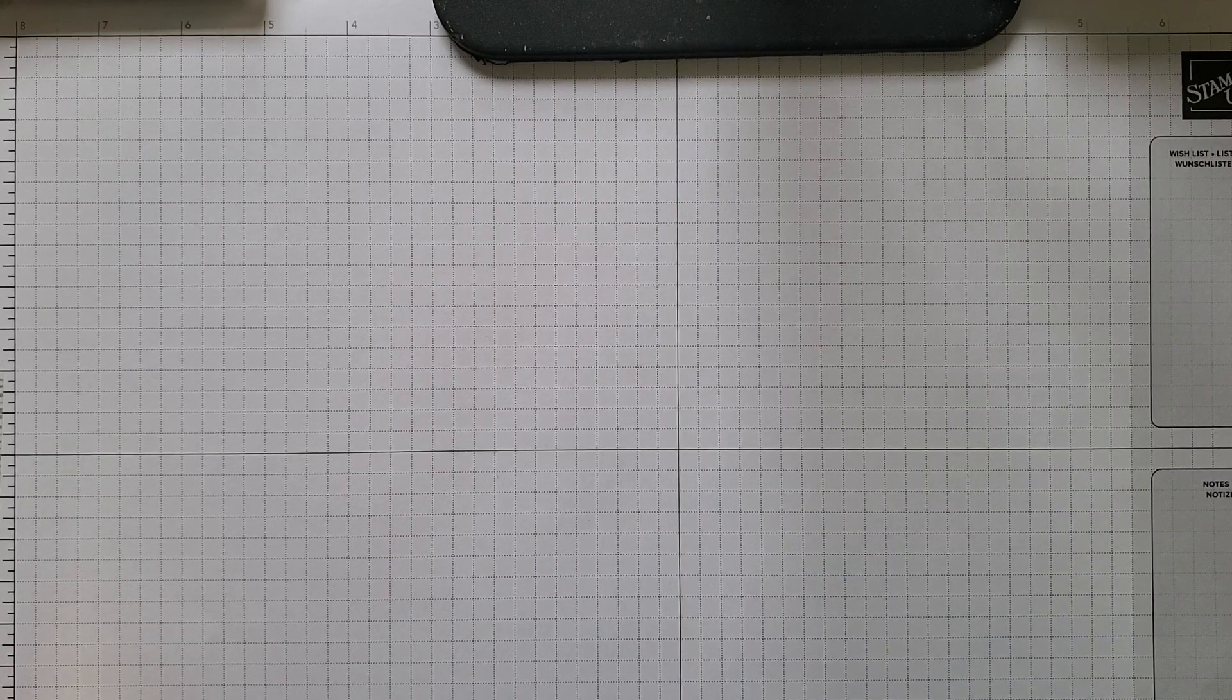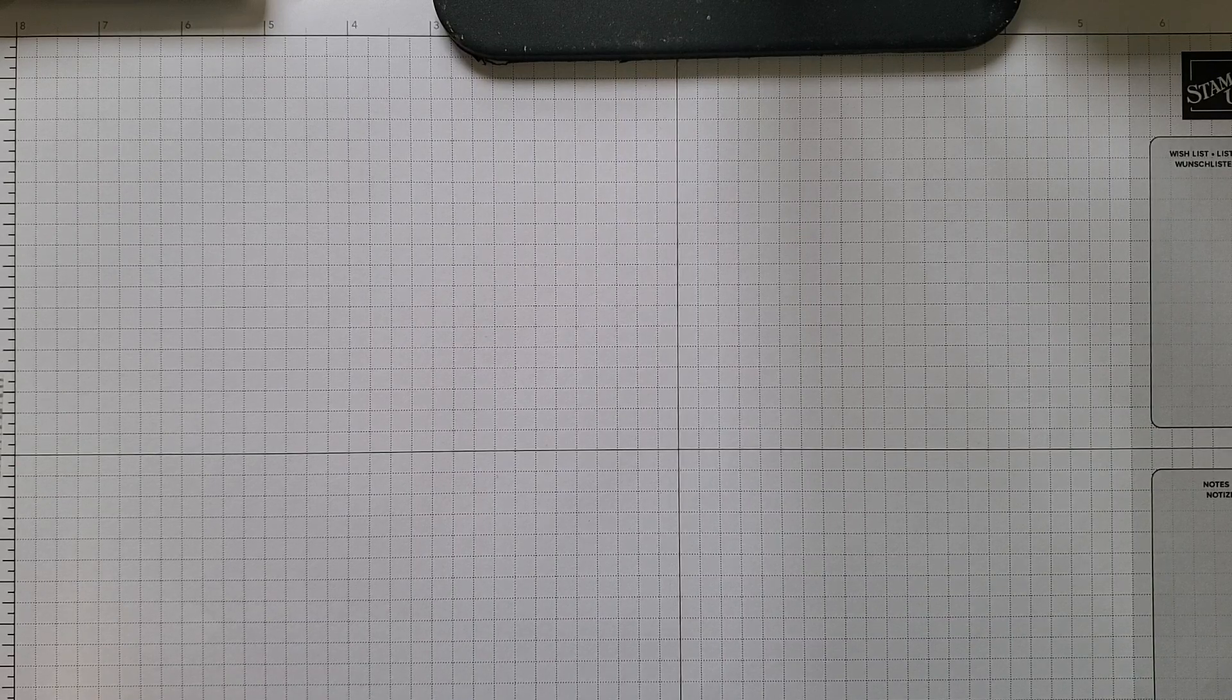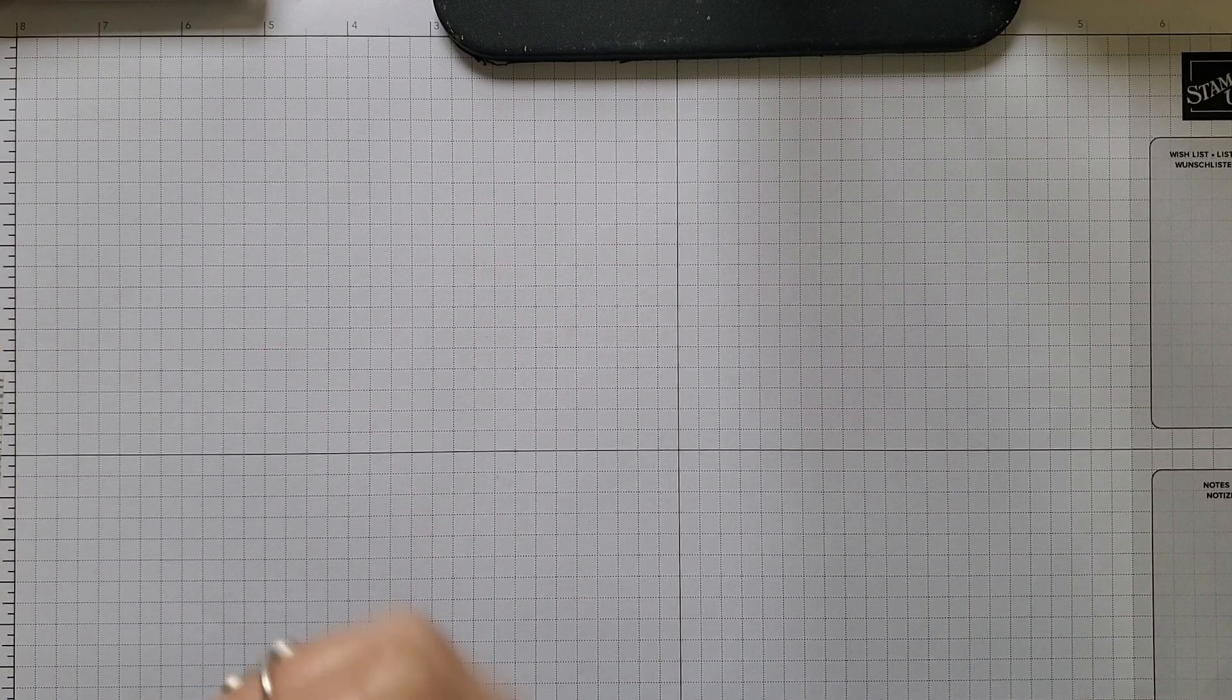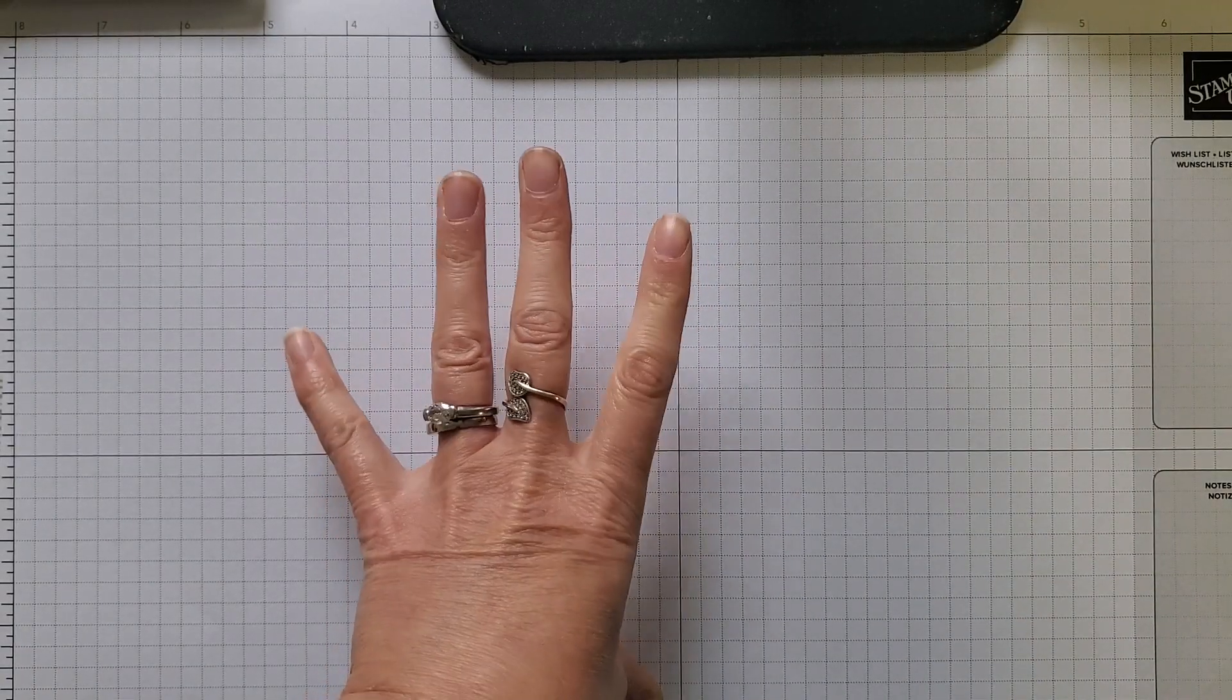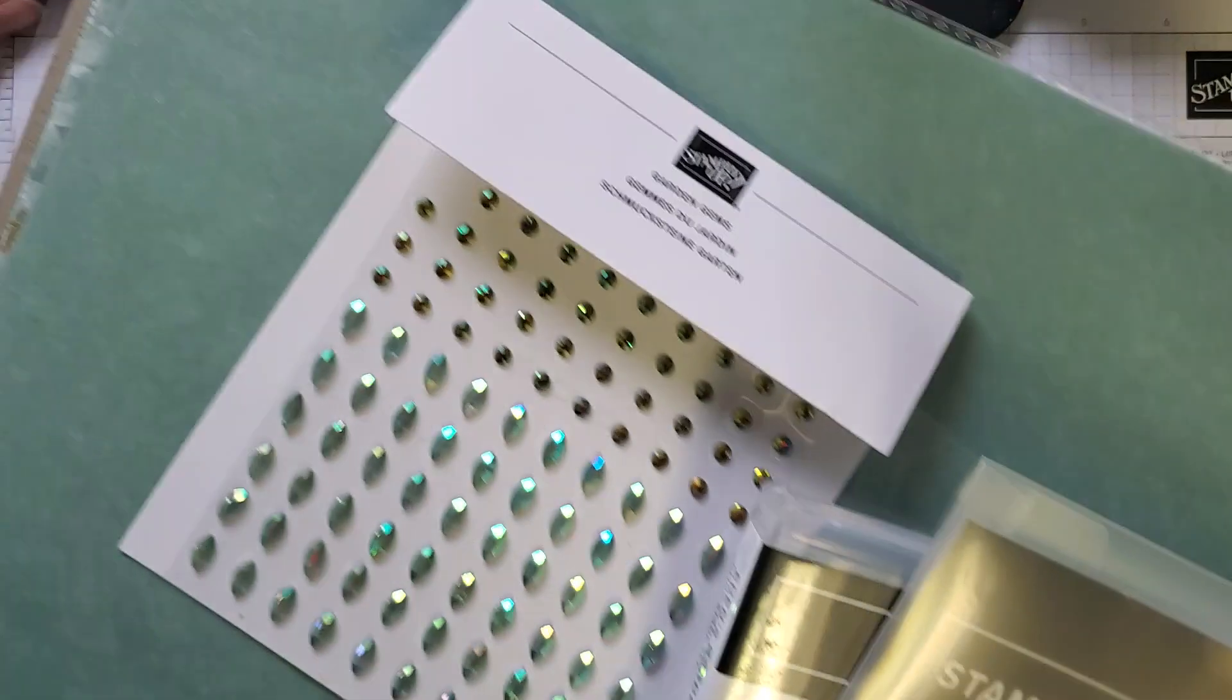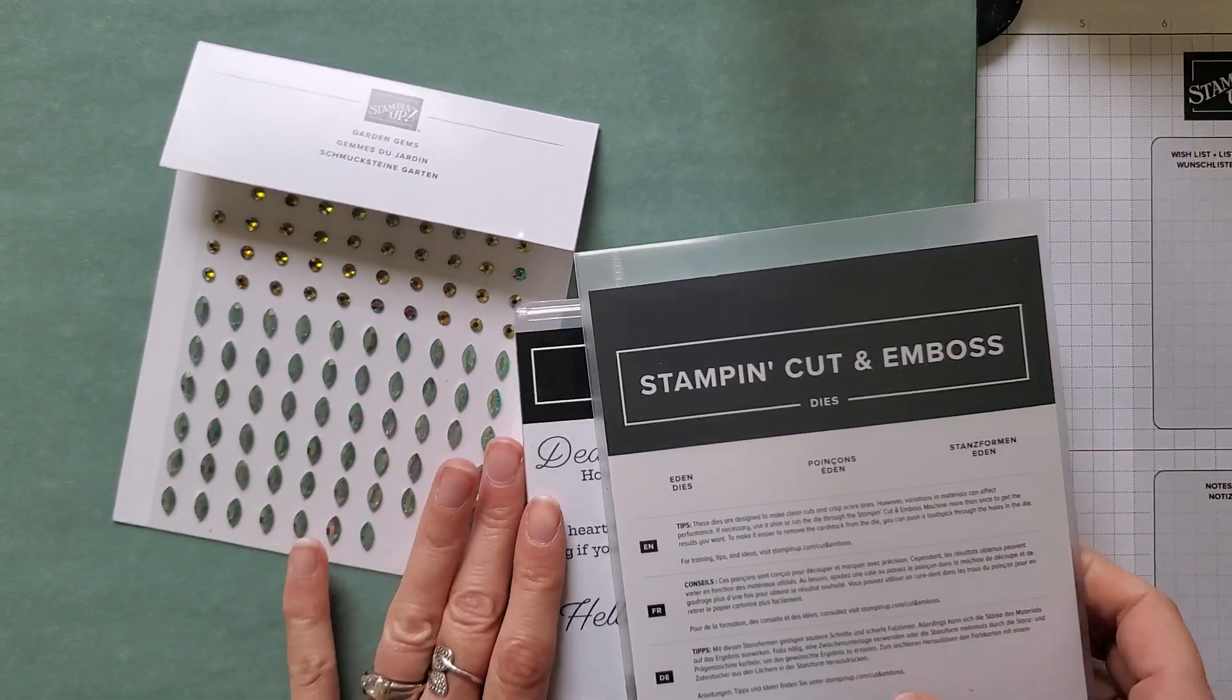So I'm going to start with some brand new early release product. Some of it's only available for this month only. The bundle is actually a sneak peek of a bundle that's coming out in the January through June mini catalog, but it's all available right now in November. So I'll show you that and some samples, and then we're going to recreate a card that I made this weekend at my holiday card class.